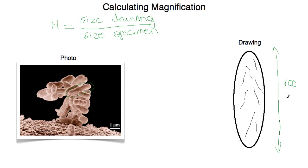And I find it to be 100mm. Then I need to take the same measurement, the length of my cell in the photo, so the actual specimen. And I do this as such.